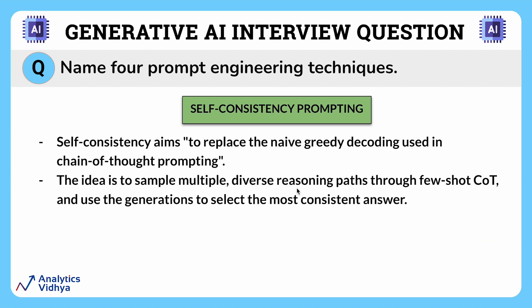Finally, we have self-consistency prompting. This basically builds on chain of thought prompting. Self-consistency aims to replace the naive greedy decoding used in chain of thought prompting. Imagine you are trying to write a story one sentence at a time, where each sentence is based on the previous one. Writing the next sentence without really thinking about how it fits with the previous one — that's what we mean by naive greedy decoding.